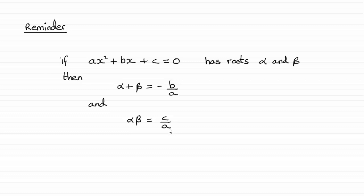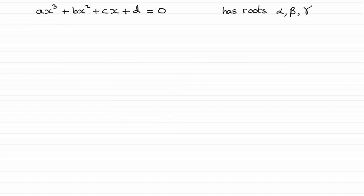Now in this video, what I want to do is show you what happens — what the connection is — when we look at the roots of a cubic equation. So if we take a cubic equation, let's say this one here: ax cubed plus bx squared plus cx plus d equals 0. Let's say it has roots alpha, beta, and gamma. That means x would equal alpha, x equal beta, x equal gamma.